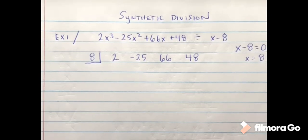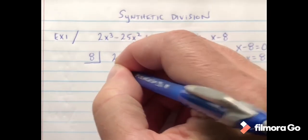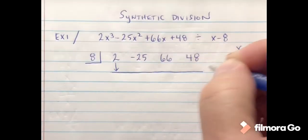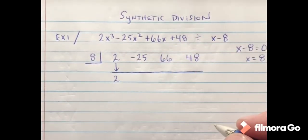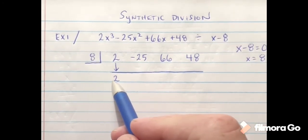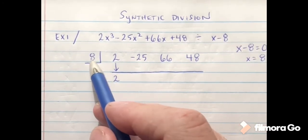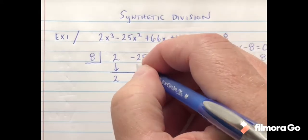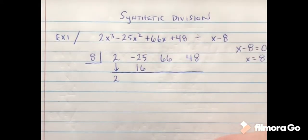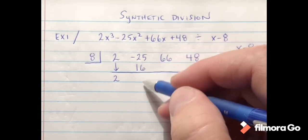So the first thing we're going to do is we're going to bring the first number straight down. So I'm bringing that number down, I get a 2. I'm then going to take the number in the box and multiply it times this number. So 8 times 2 gives me 16.